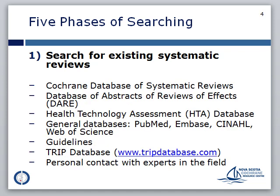When you are looking for existing reviews, you will check a number of sources. These include the Cochrane Library, which will help identify reviews included in the Cochrane Database of Systematic Reviews, DARE, otherwise known as the Database of Abstracts of Reviews of Effects, as well as the Health Technology Assessment Database. General databases such as PubMed, Embase, and CINAHL can also be used to search for systematic reviews.